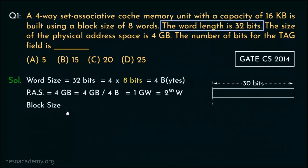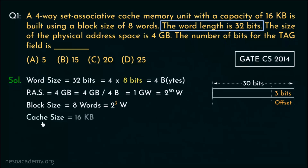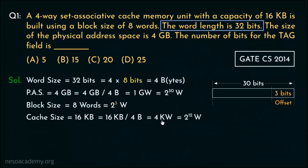Coming to the block size, it is given as 8 words, which can be written as 2 cubed words. Therefore, 3 bits are going to be used for the offset. The cache size is mentioned as 16 kilobytes, so we again need to convert this in terms of words. Dividing the cache size by 1 word (4 bytes) gives us 4 kilobytes, or 2 to the power 12 words, because 4 is 2 squared and kilo is 2 to the power 10.